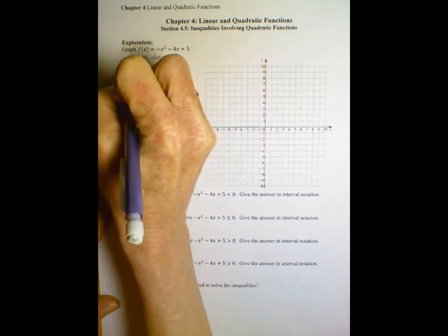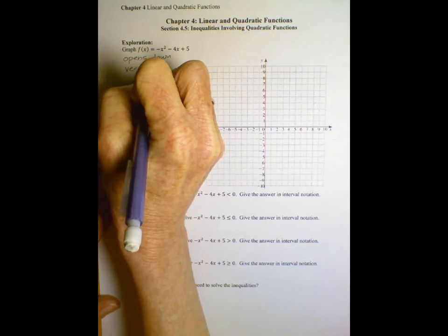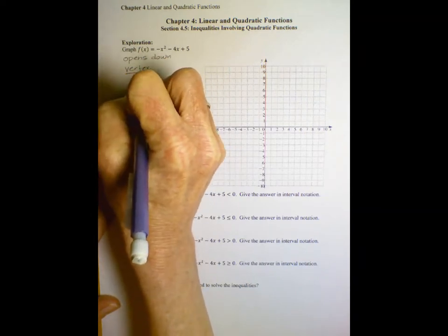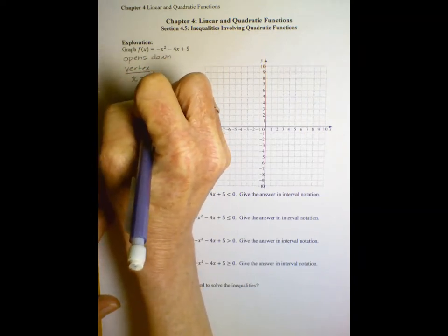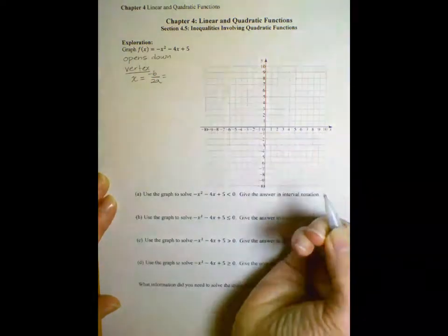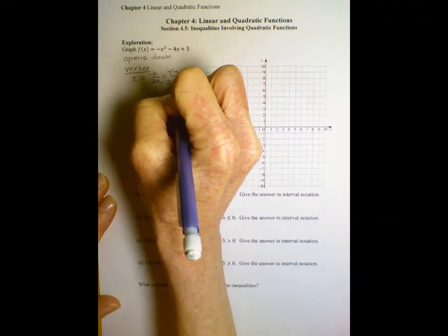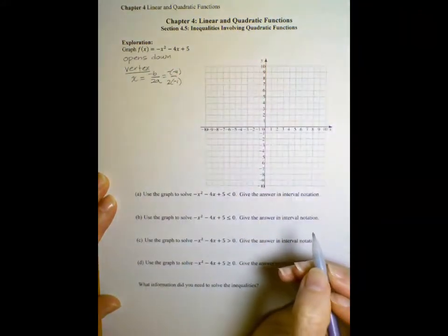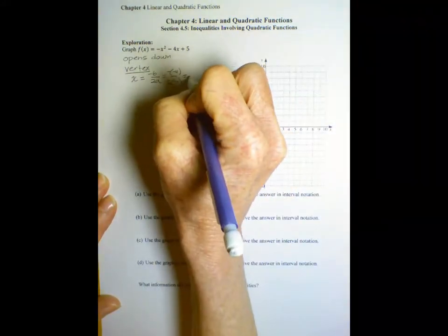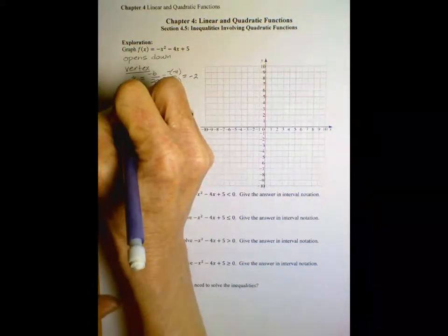So now let's find the vertex. We find that by using the formula x equals negative b over 2a to get the x coordinate. So that's negative negative 4 over 2 times negative 1. So that comes out to be positive 4 over negative 2 or negative 2. There's the x coordinate of the vertex.